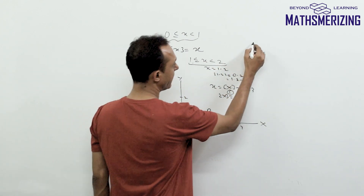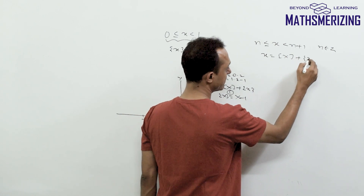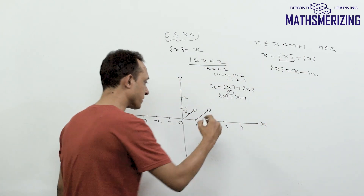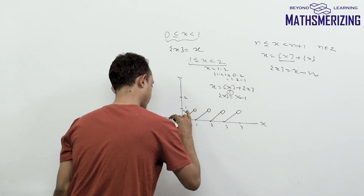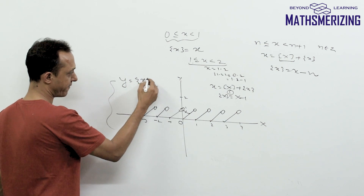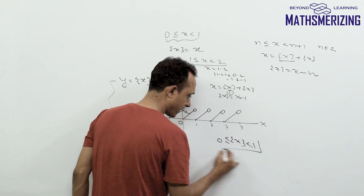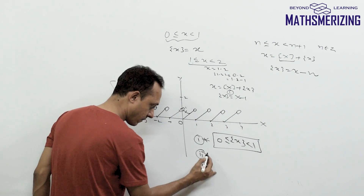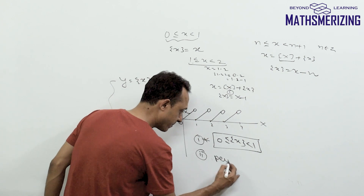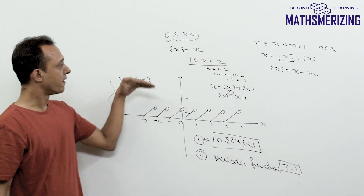In general, for x lying between n and n+1 (where n is an integer), we have x = ⌊x⌋ + {x}, so {x} = x − n. Continuing this pattern produces the full graph of y = {x}. From the graph, we can see that the fractional part of x always lies between 0 and 1, and the graph is a periodic function — this pattern repeats itself after every one unit. Its fundamental period is 1.